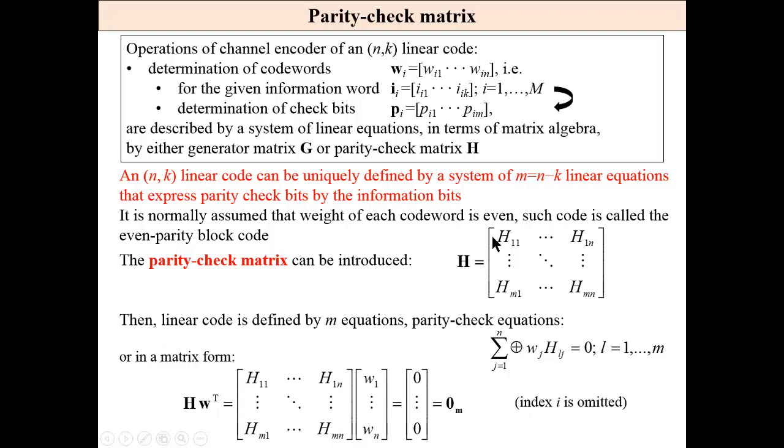So we may express this information contained in this matrix by equations, or in matrix form these equations are presented here. Parity check matrix multiplied by a codeword, transposed codeword vector column vector, is zero.